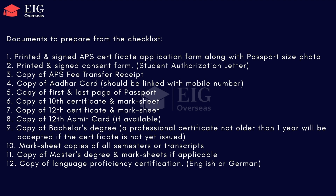The document checklist is as follows: First, printed and signed APS application form along with passport size photo. Second, printed and signed consent form, i.e., student authorization letter. Third, copy of APS fee transfer receipt. Fourth, copy of Aadhar card with linked mobile number. Fifth, copy of passport — first page and last page. Sixth, copy of class 10th certificate and mark sheet. Seventh, copy of class 12th certificate and mark sheet. Eighth, copy of class 12th admit card if available.